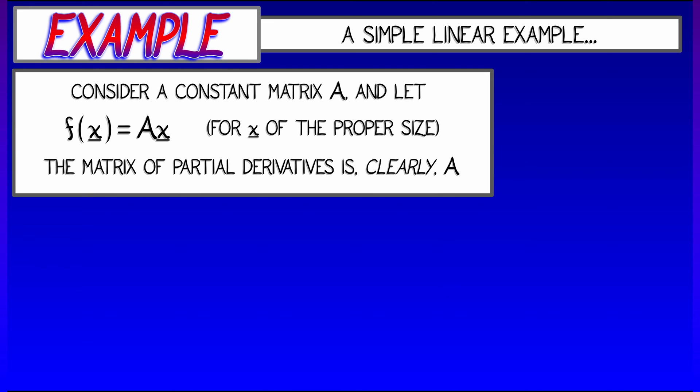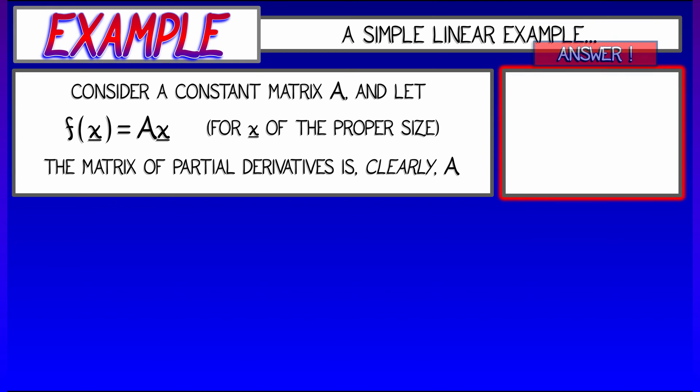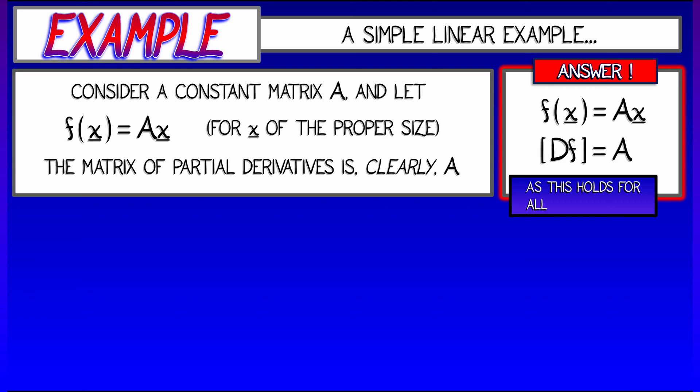In this case, the matrix of partial derivatives of this function is clearly giving you A back again. You should check that if there's any doubt in your mind. And this seems like it's going to be really simple. If f(x) is constant A times x, the derivative of f is equal to A. This holds at all input values since the derivative is just a constant.